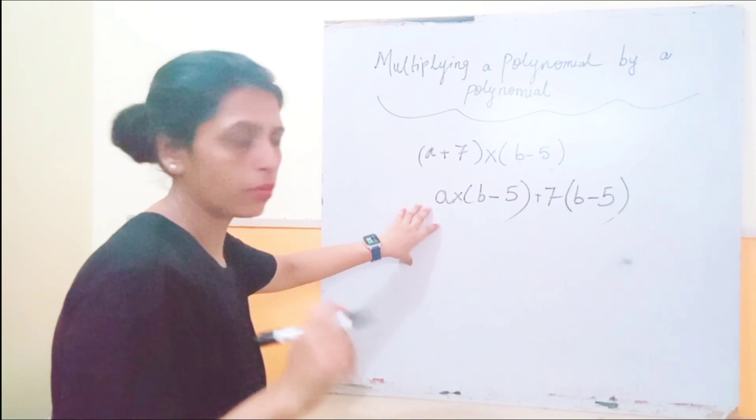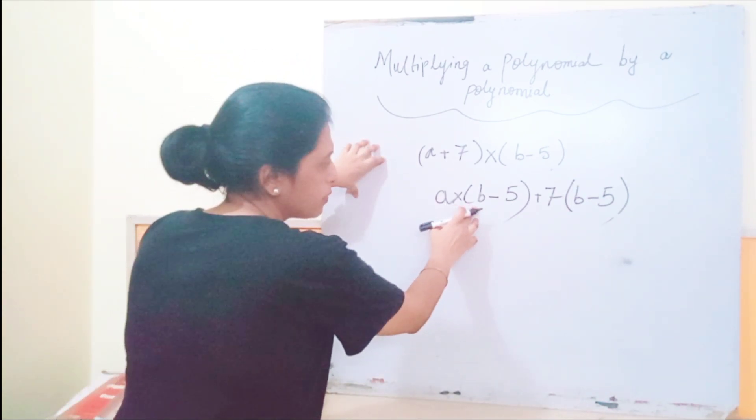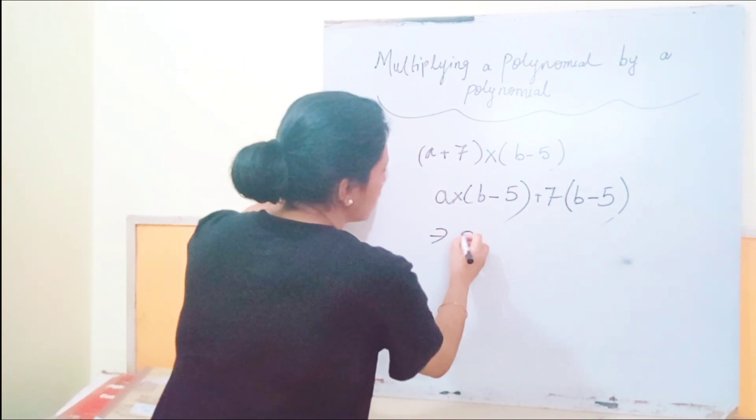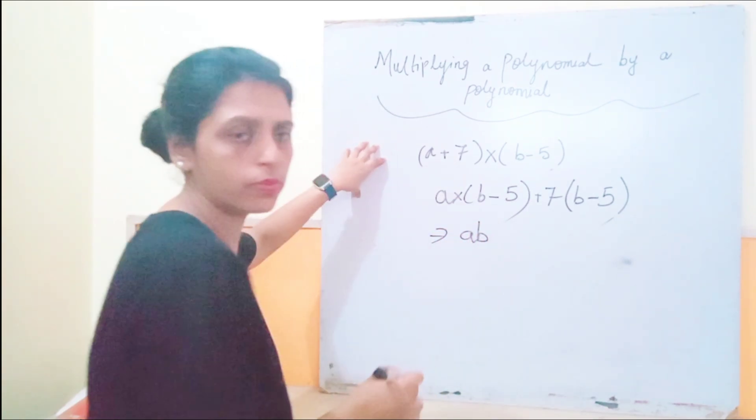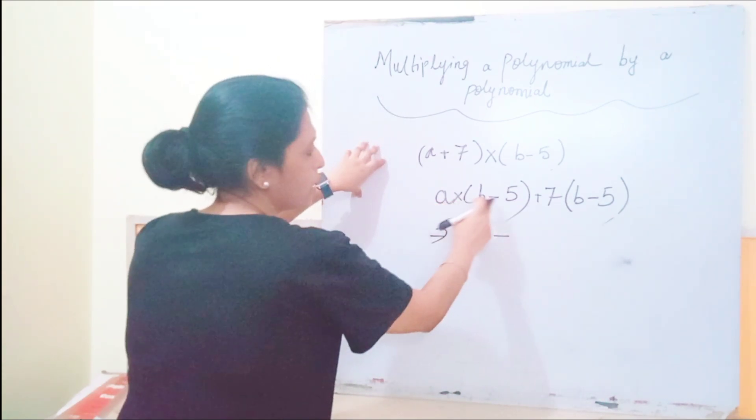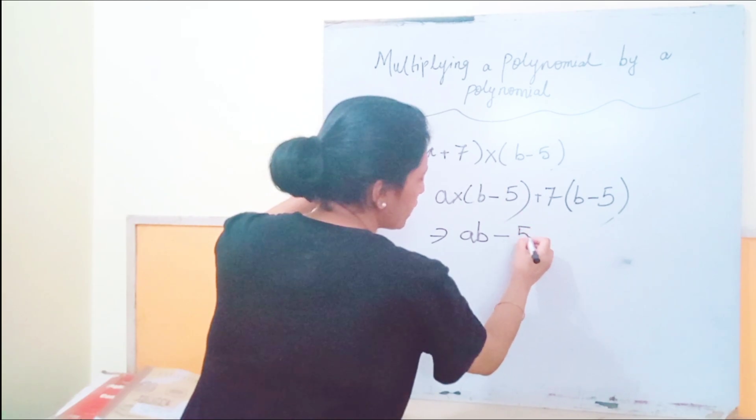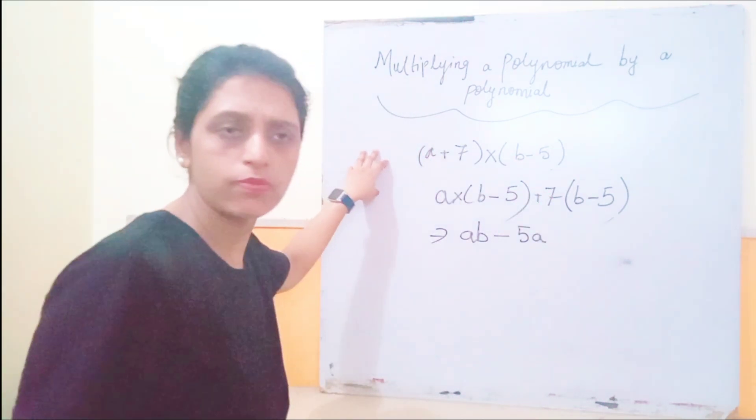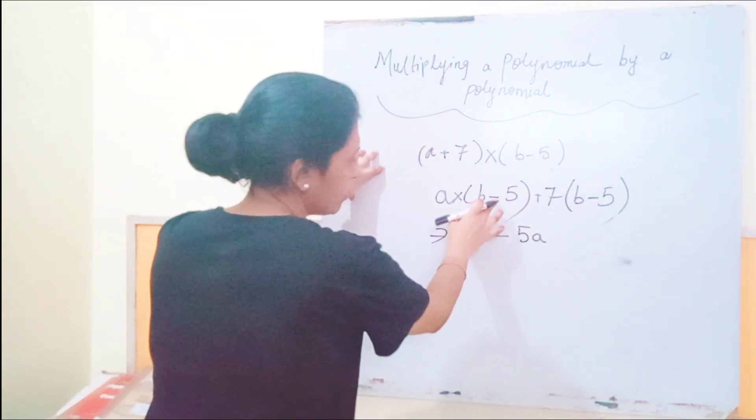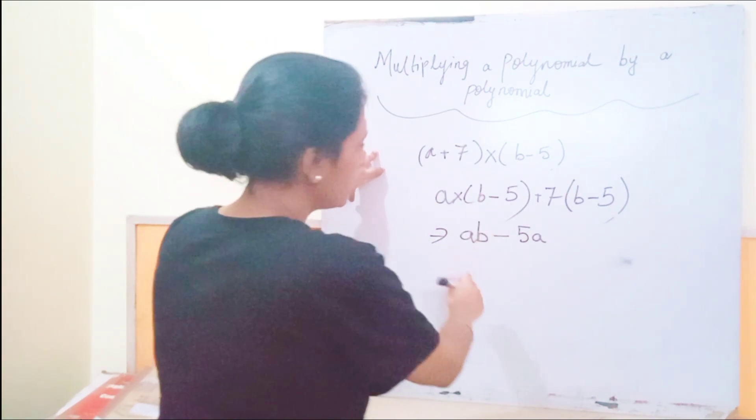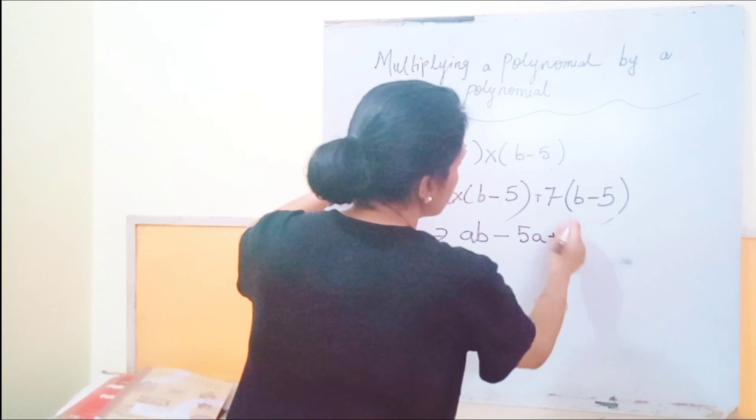So now a is multiplied with b, it will give a into b or ab minus a into 5 will give you 5a or a5, means the same. Okay, because here there is a negative sign, so you are going to put minus sign here. Plus 7 into b will be